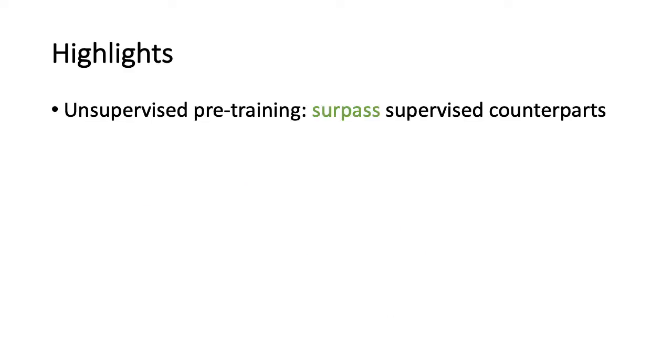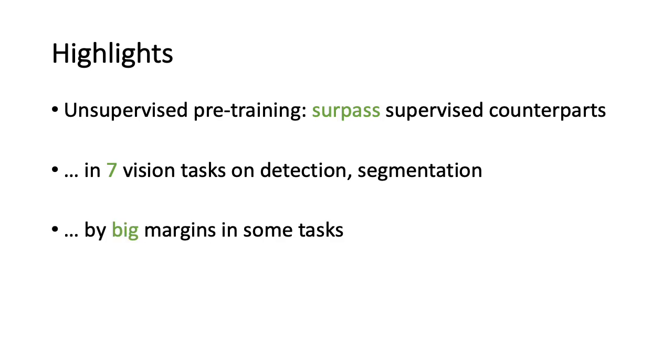In this work, we show that our unsupervised pre-training method can surpass its supervised counterparts in multiple vision tasks on detection or segmentation. In some cases, it can surpass by big margins. Moreover, our method can be scaled out to 1 billion images and show improvement.